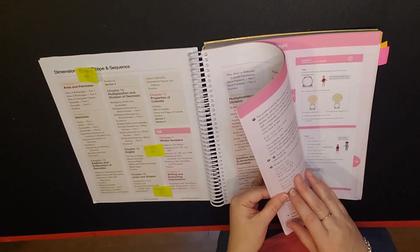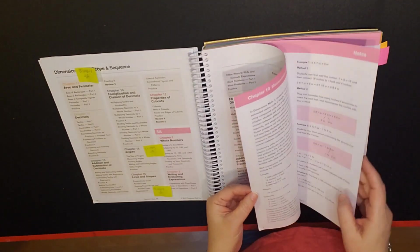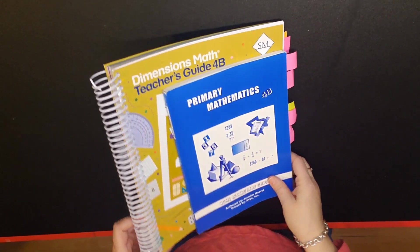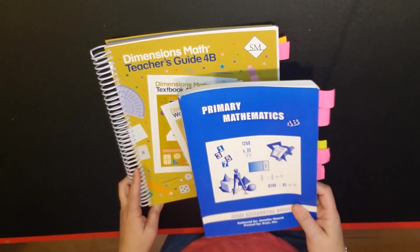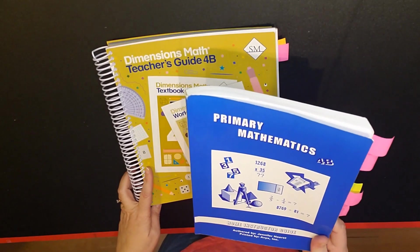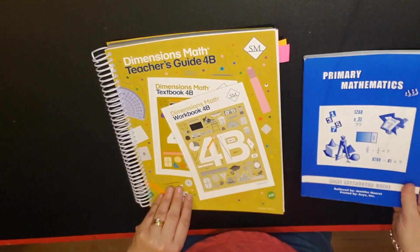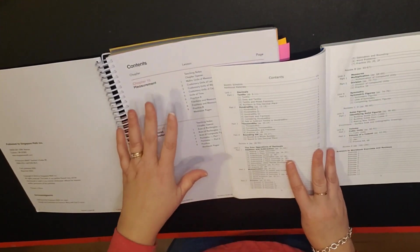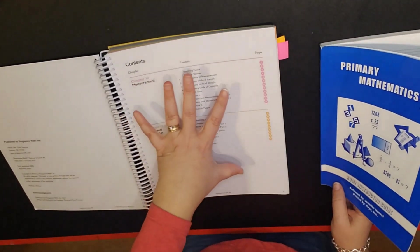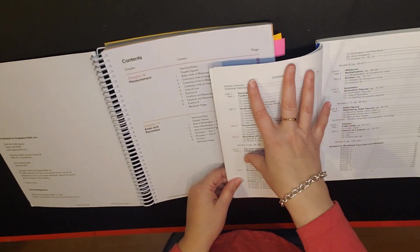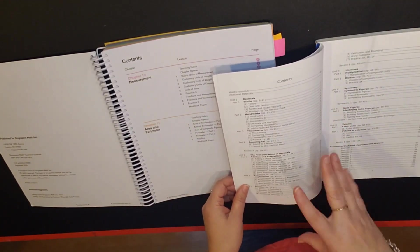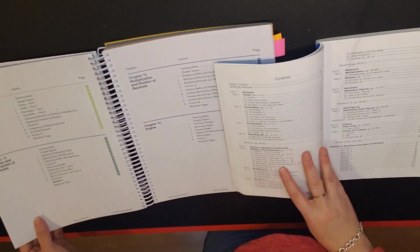Now let's look at the teacher's guides just in general. The first thing to notice is there is a large difference just simply in the size between dimensions teacher's guide and the primary mathematics home instructors guide. When we open them this is very typical for the entire book. Dimensions is in color, it's very spread out. Primary math is in black and white and it has quite a bit of information on each page.